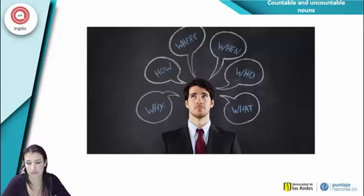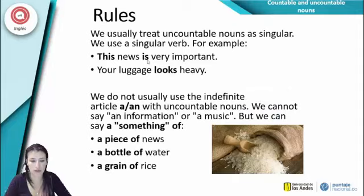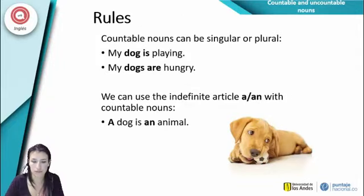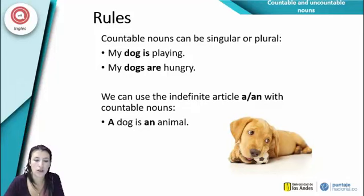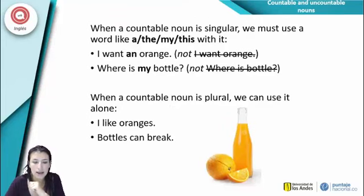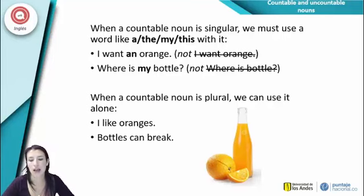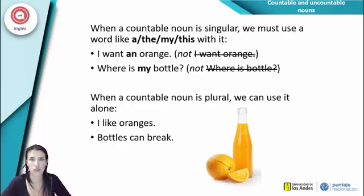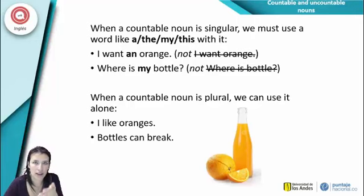Hay unos que se utilizan para ambos — vamos a devolvernos en la presentación. Para los contables ya sabemos que pueden ser singulares o plurales: puedo decir 'mi perro juega' o 'mis perros están jugando.' Cuando una palabra es singular debemos utilizar 'a', 'the', 'my', 'this' para aclarar — por ejemplo 'I want an orange' es correcto, pero 'I want orange' no estaría correcto gramaticalmente. Cuando están en plural no necesitamos utilizar ese tipo de palabras.